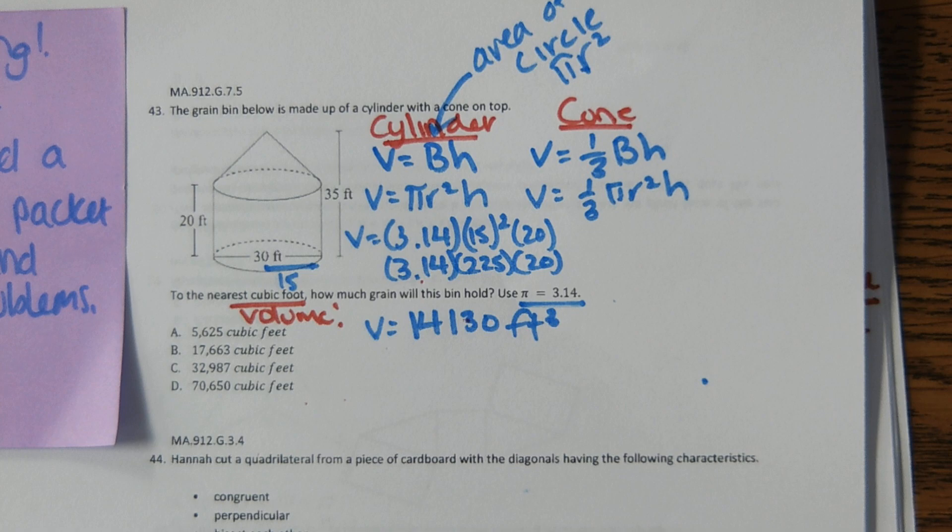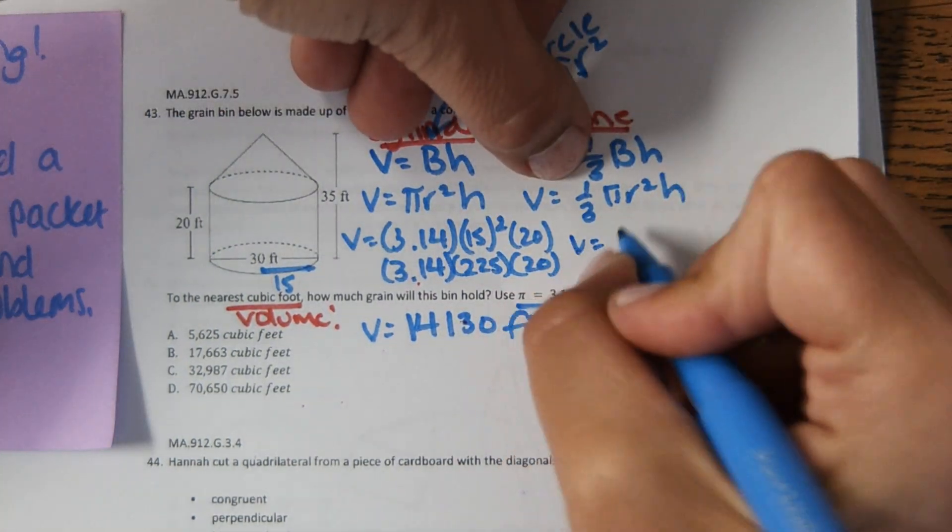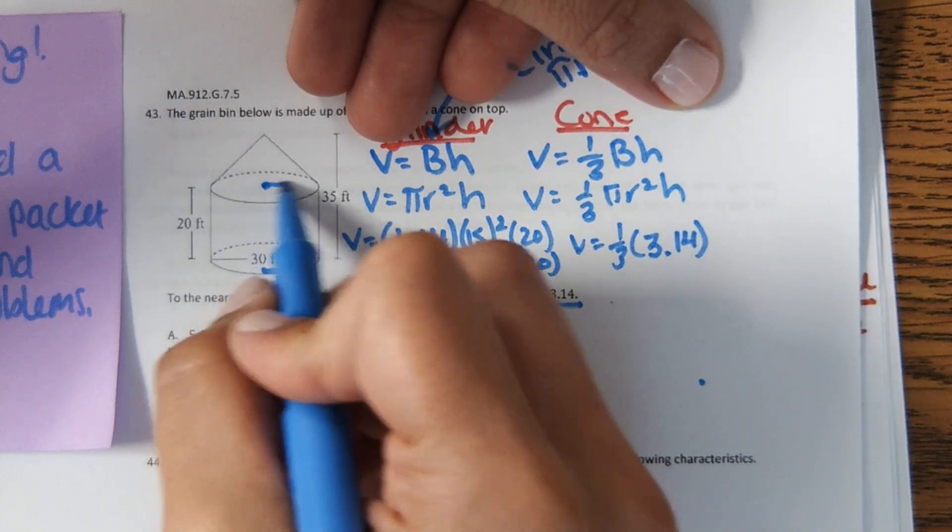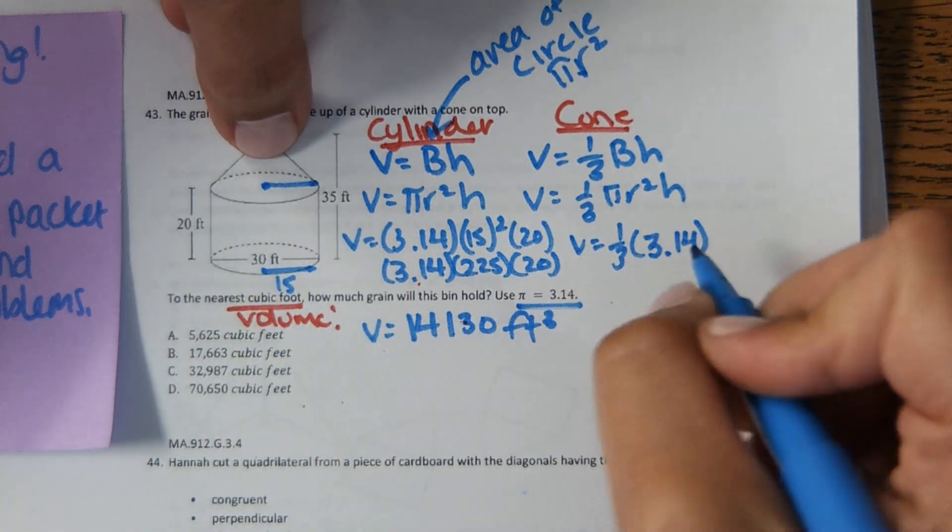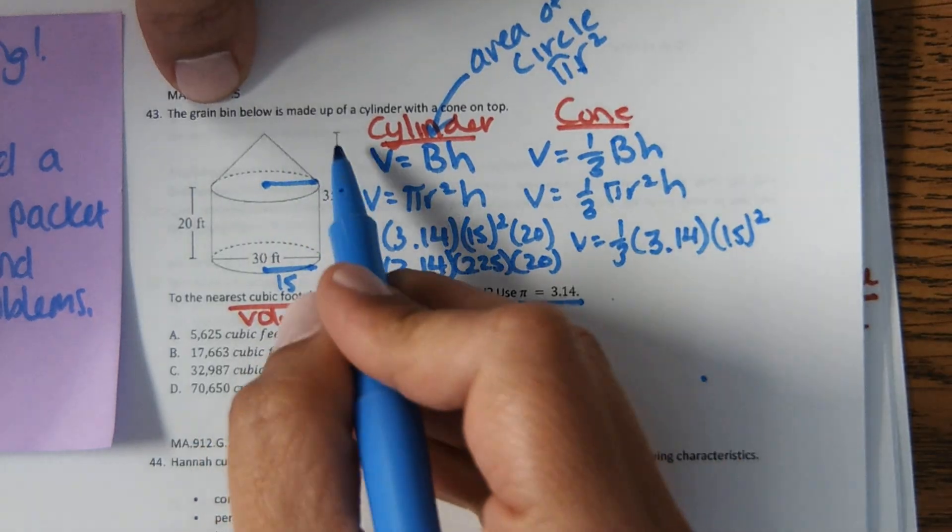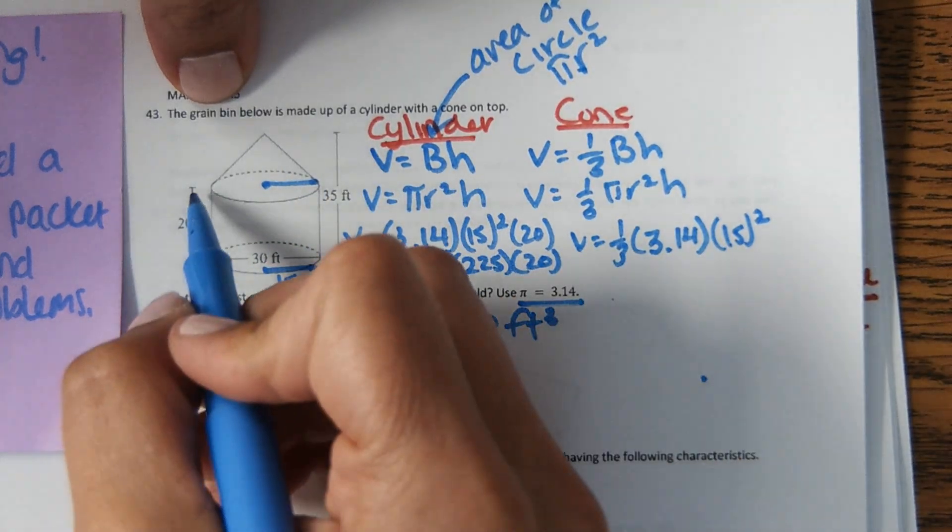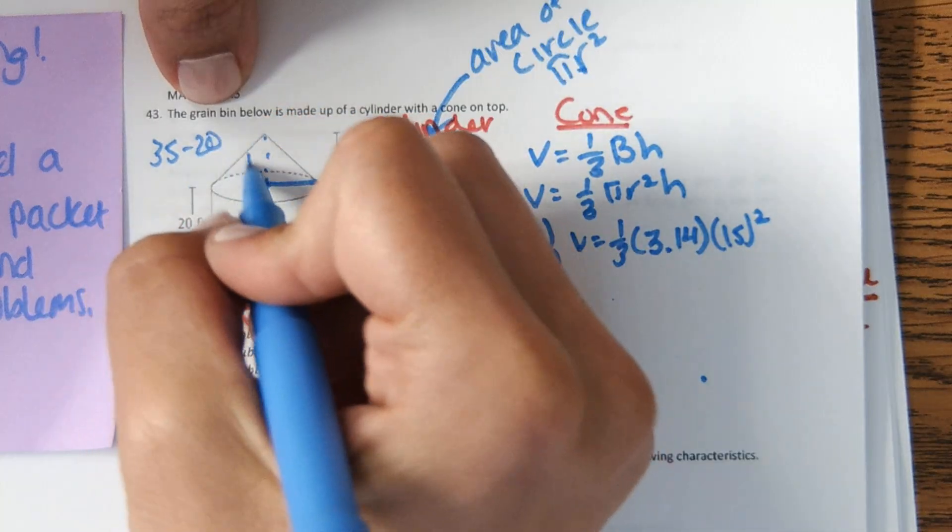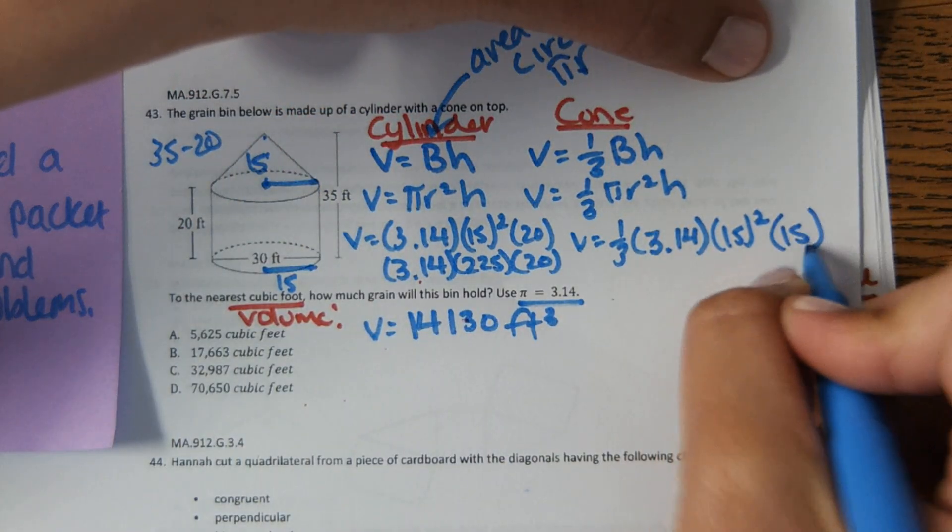And then for the cone, volume equals one third, pi is 3.14. The radius of this cone, same as the cylinder, which is 15 squared. And then the height of the cone, it shows the height of the whole shape is 35. This part is 20, so 35 minus 20 is 15. So we got 15 here.